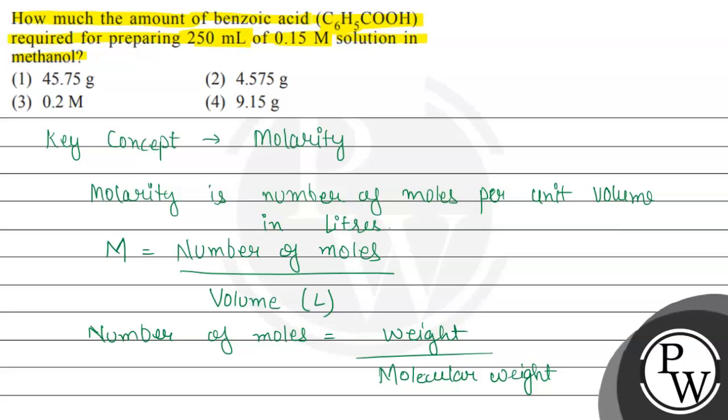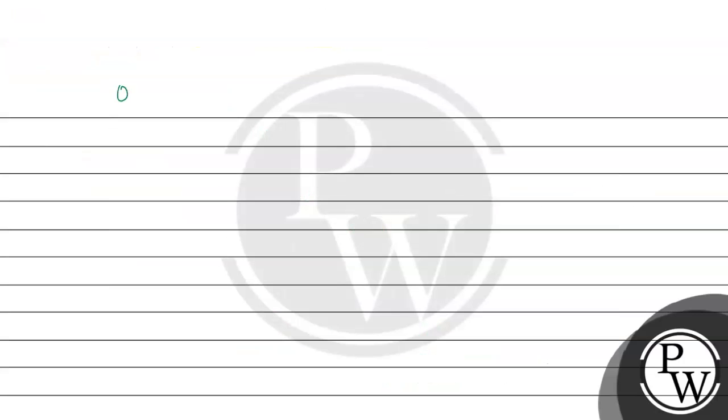So in this question, they have given us the volume in millilitre and molarity of the solution, 0.15 molar solution. And for C6H5COOH, first of all, we will find out the molar mass.